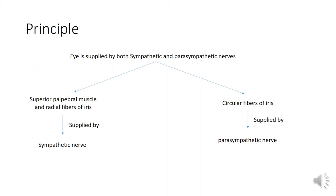Principle: Basically, eye is supplied by both sympathetic and parasympathetic nerves. The superior palpebral muscle and radial fibers of the iris are supplied by sympathetic nerve, whereas the circular fibers of the iris are supplied by parasympathetic nerve.